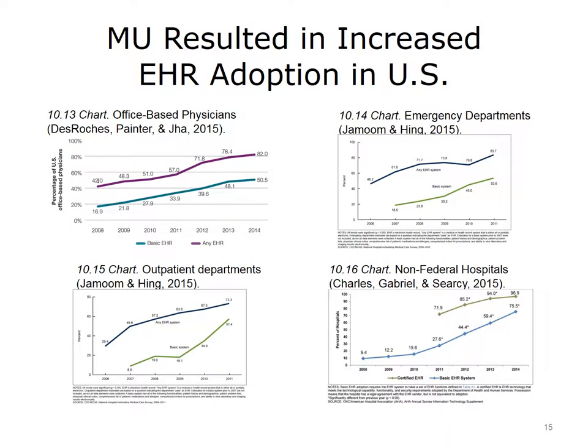How successful has the Meaningful Use program been? In terms of spurring the adoption of electronic health records, or EHRs, it has been quite successful. Whether office-based physicians, emergency departments, outpatient departments, or hospitals, the proportion of those using electronic health records has increased substantially since the beginning of the program. Probably the most successful measure has been in hospitals, with 96.9% of all U.S. hospitals now having an electronic health record, even if they have not achieved Meaningful Use — representing near-universal adoption of EHRs in hospitals.